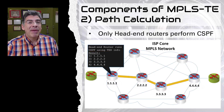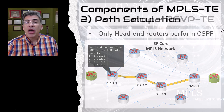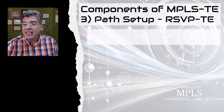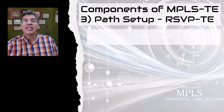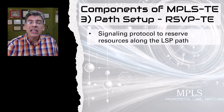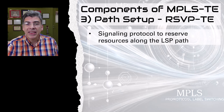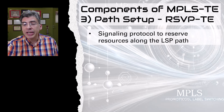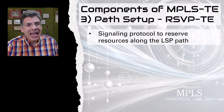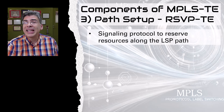The third component of MPLS TE is the actual setup of the path. We've collected link states, stored them in the TED, run CSPF on the head-end router, and have an ordered list of IP addresses. Now we need a signaling protocol to reserve resources along the path to establish our LSP tunnel. This is done using resource reservation protocol traffic engineering, or RSVP-TE. Regular RSVP was originally designed to employ quality of service features on networks but never became widespread; however, with its traffic engineering extensions it has become ideal for use with MPLS TE.